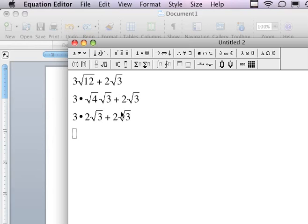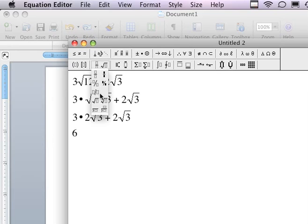Plus 2 times the square root of 3. In my next step, I can multiply. I have 3 times 2 is 6. Square root of 3 is not going to change. Plus 2 times the square root of 3.